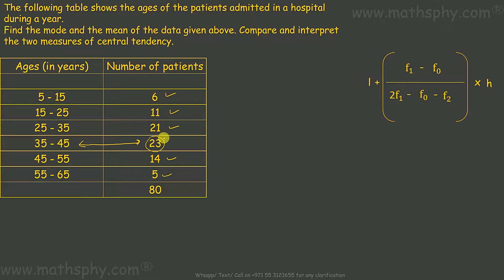which is 23. So this range we call modal class. I'll write here - this is 35 to 45. Now the formula to find out mode is this here.